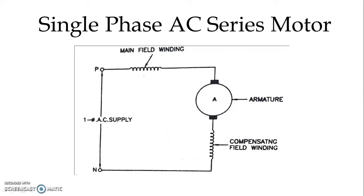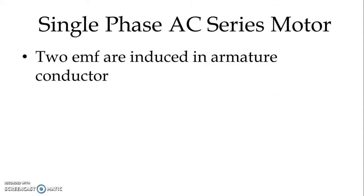One additional compensating winding is also connected in series with the armature. The purpose of compensating winding is to prevent excessive sparking at the brushes and affect the power factor. When we supply single phase AC to the AC series motor two different types of EMF are induced in the armature conductor. One is known as dynamically induced EMF and that is because of rotation of the armature conductor in the magnetic field.